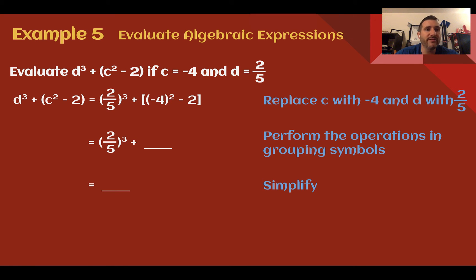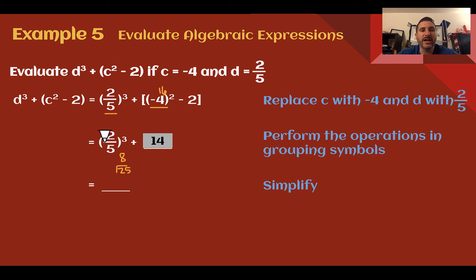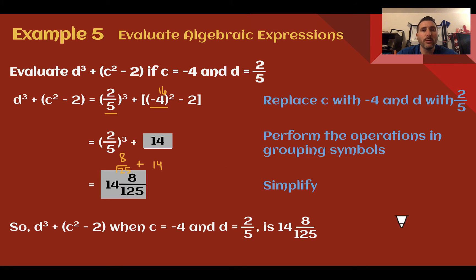Example 5: Evaluate algebraic expressions. Evaluate d cubed plus the quantity c squared minus 2, if c is negative 4 and d is 2 fifths. Replacing d with 2 fifths and c with negative 4: I have 2 fifths to the 3rd power plus the quantity negative 4 squared minus 2. I switch parentheses to square brackets to avoid confusion. Following order of operations: negative 4 squared is negative 4 times negative 4, which is positive 16. 16 minus 2 is 14. Then 2 fifths to the 3rd power: 2 fifths times 2 fifths times 2 fifths gives 8 over 125. So my final answer is 14 and 8 over 125.